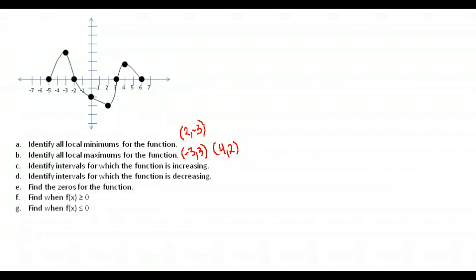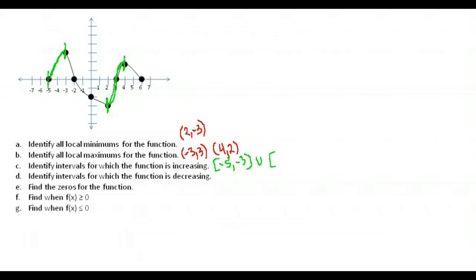Identify intervals for which the function is increasing — any place the function is going upward or has a positive slope. From negative five to negative three, the graph is going upward. Then from x equals two, it starts going upward again until x equals four. So the intervals of increase are from negative five to negative three, and from two to four. Remember, we list the x values for these intervals.